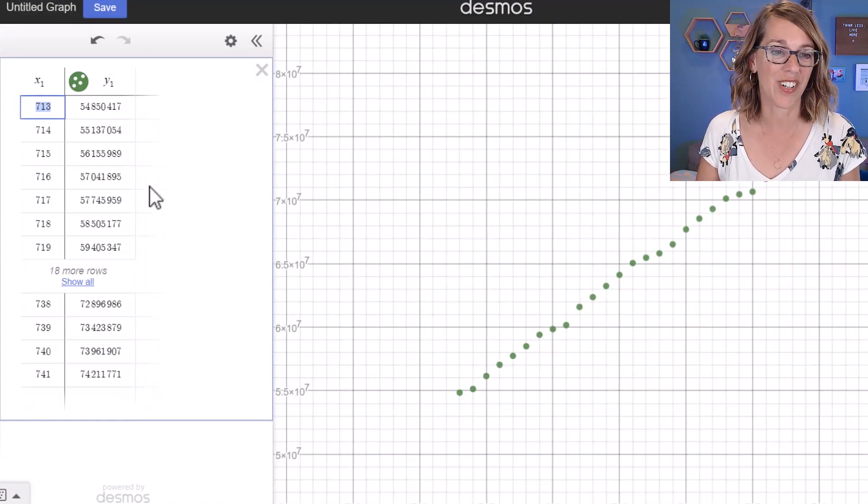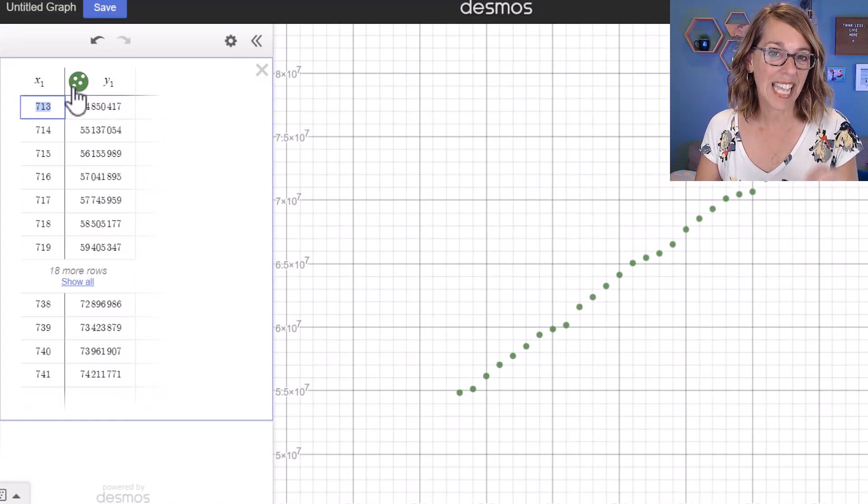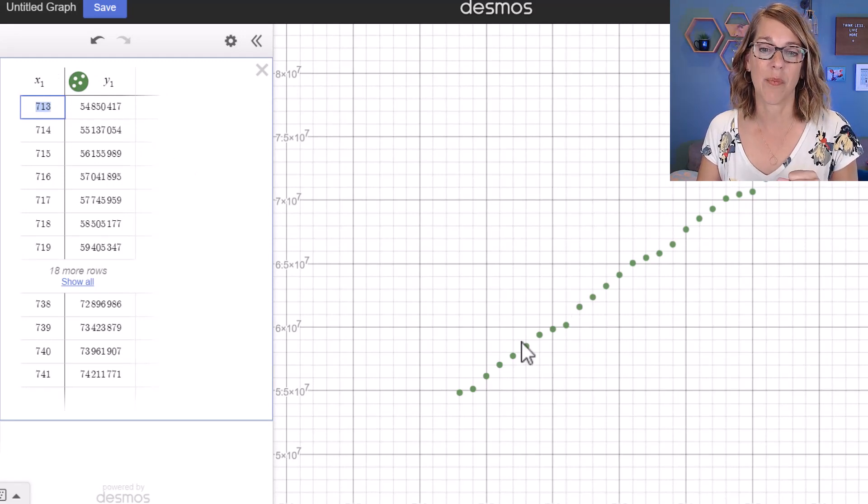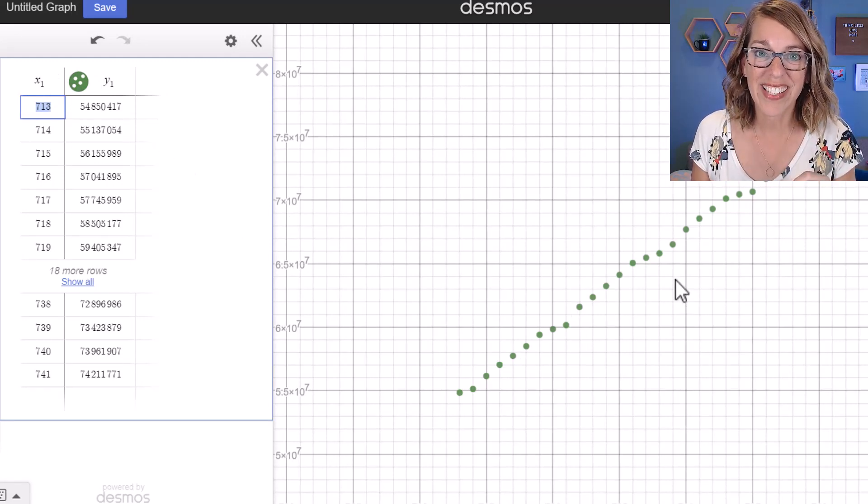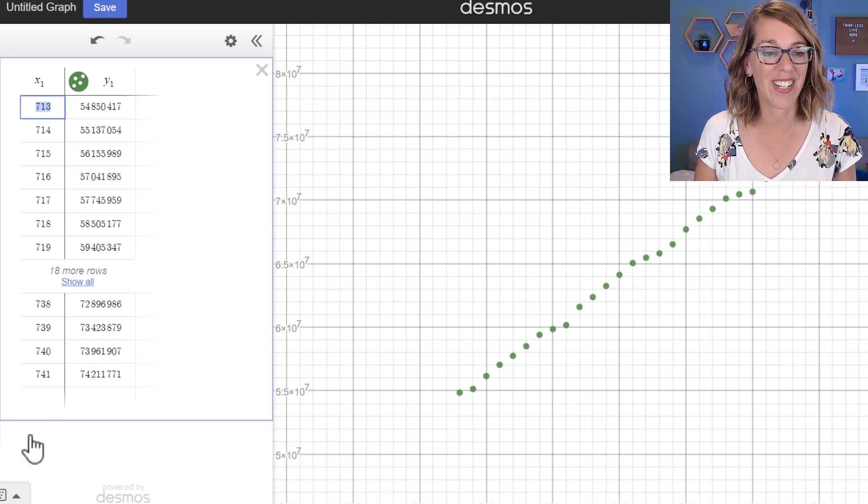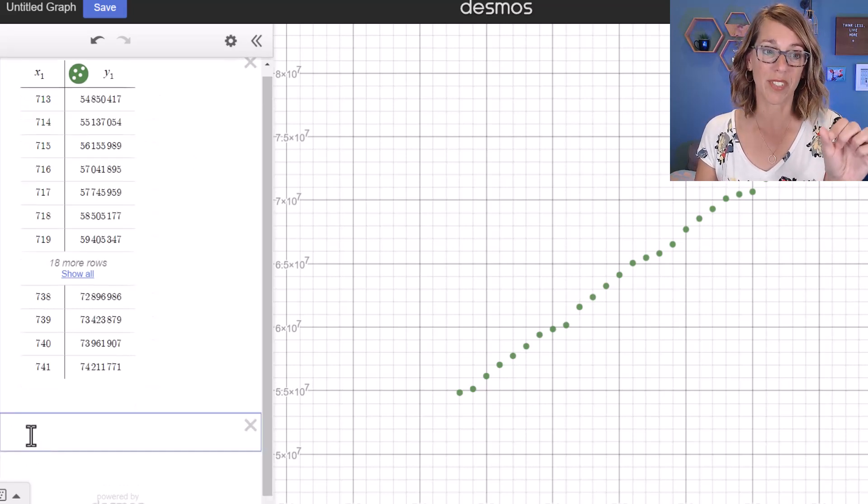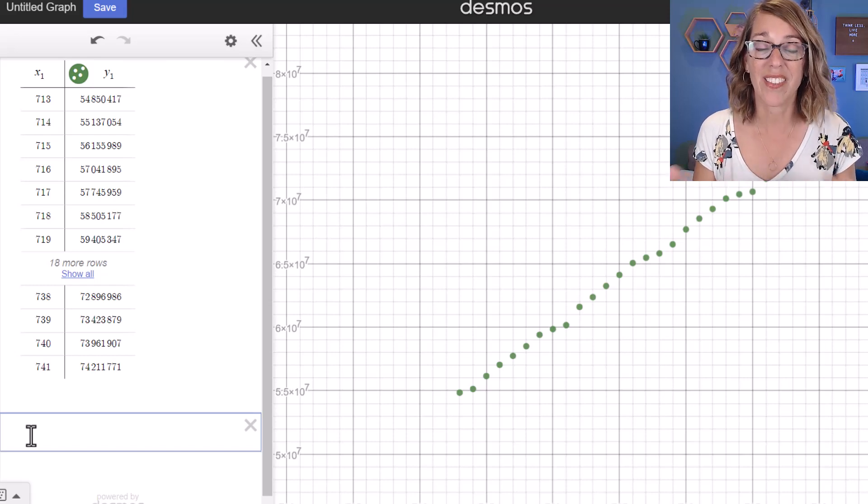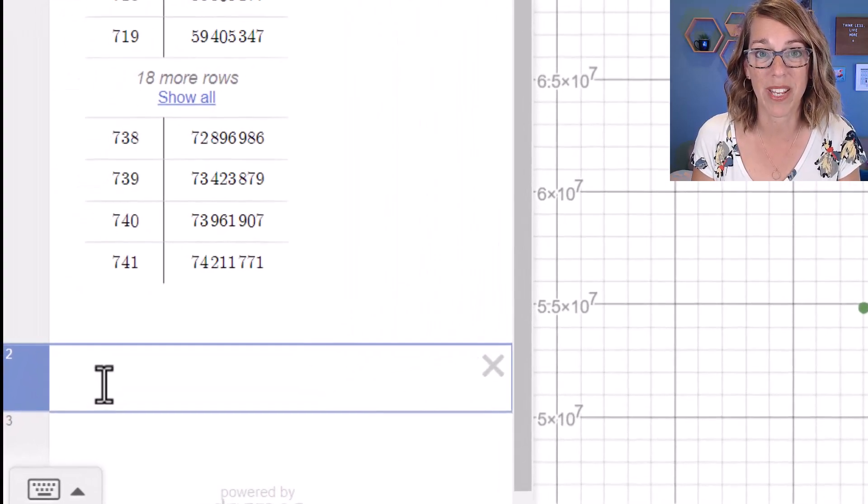Let me make this a little bit larger. So I've got my data, and it's labeled my values x sub 1 and y sub 1. I want to create the regression line, the best line that fits this data, and I can do that by using the variables that I've got in my table and the equation of a line y equals mx plus b.